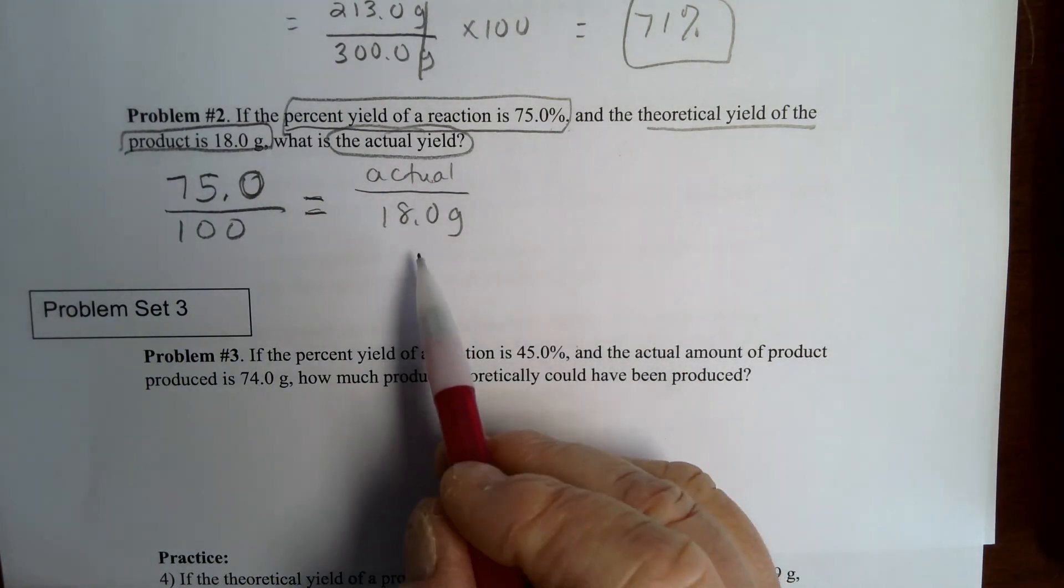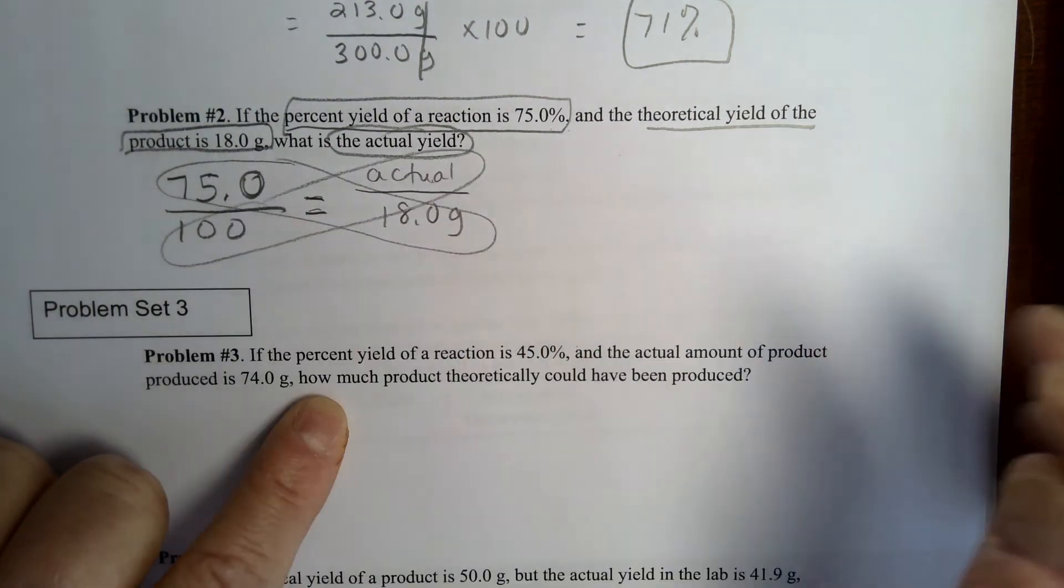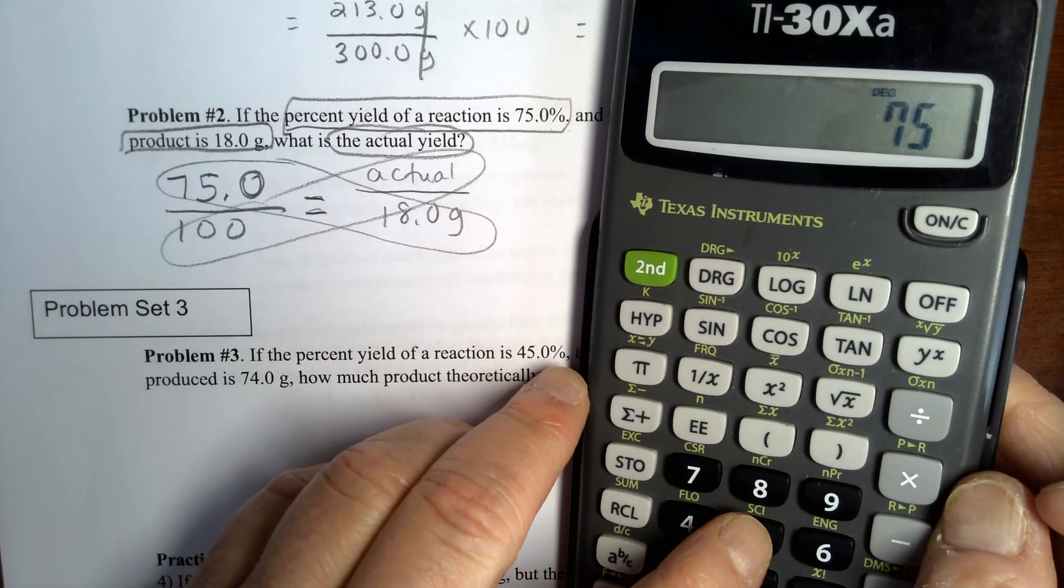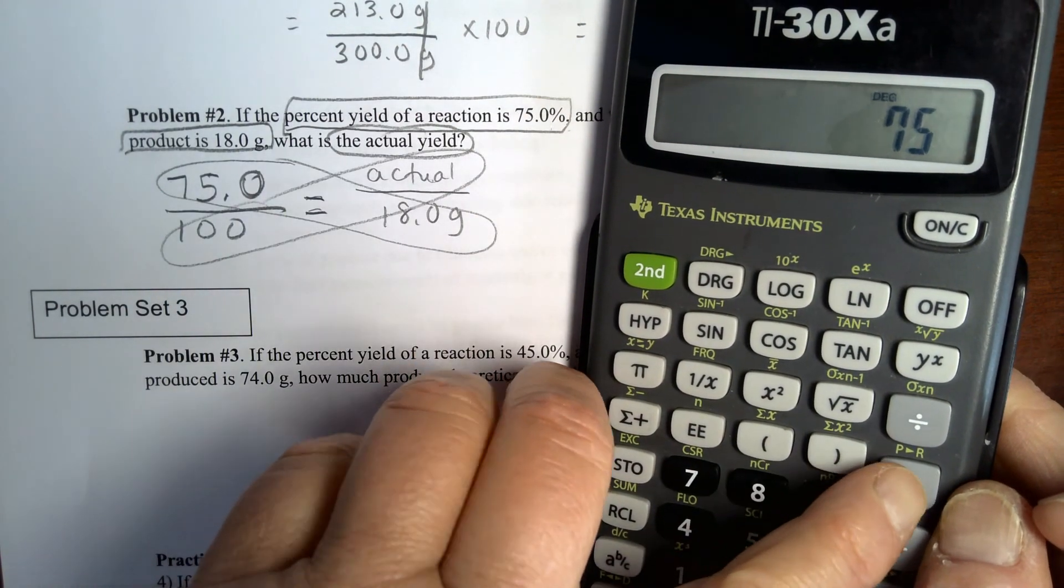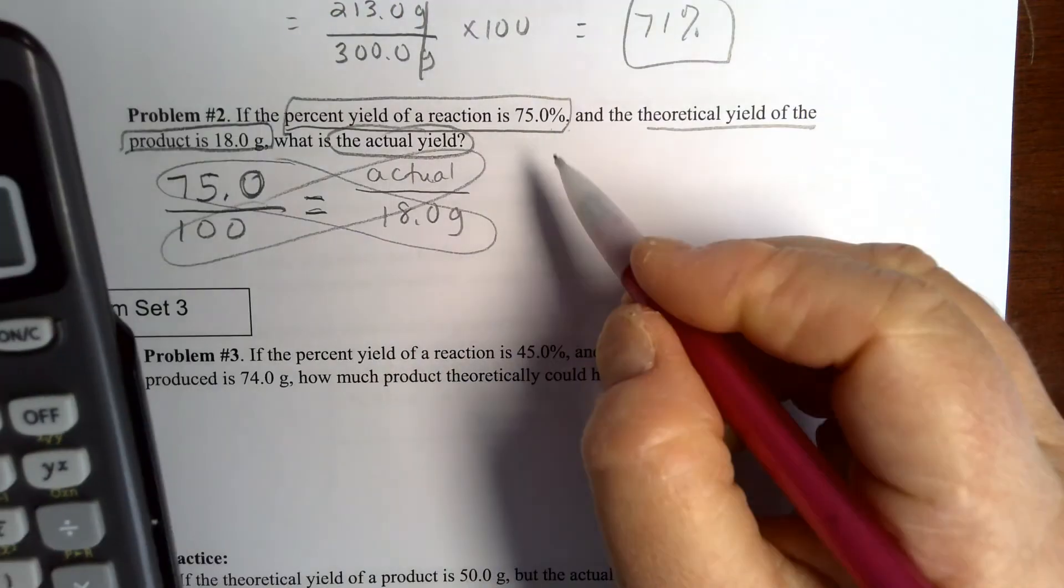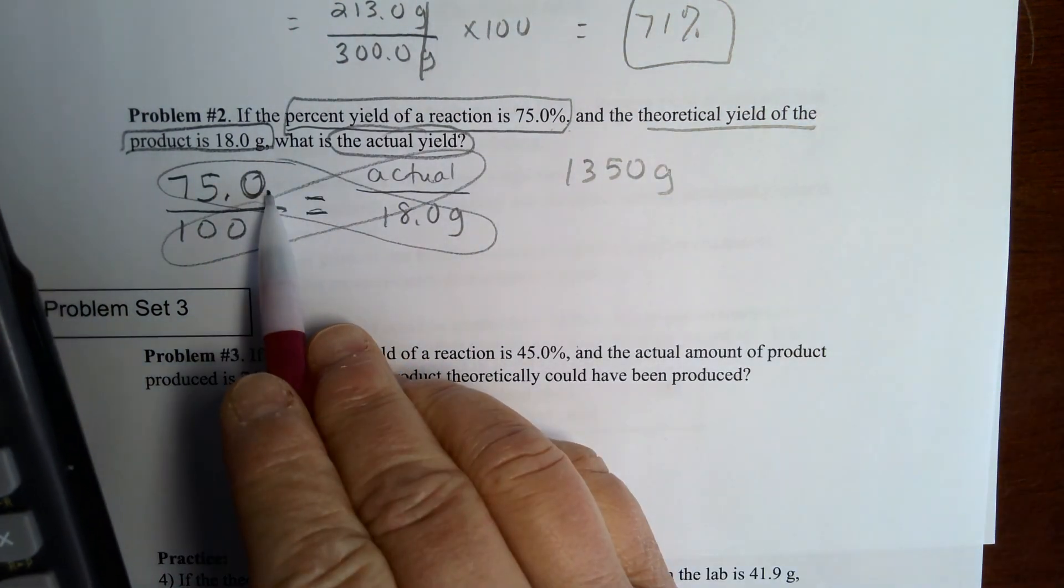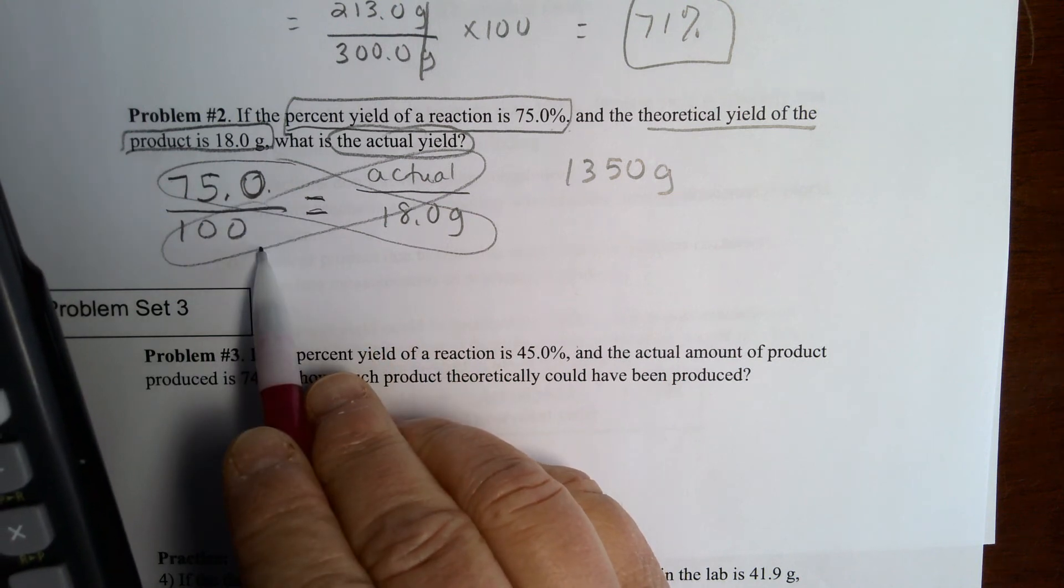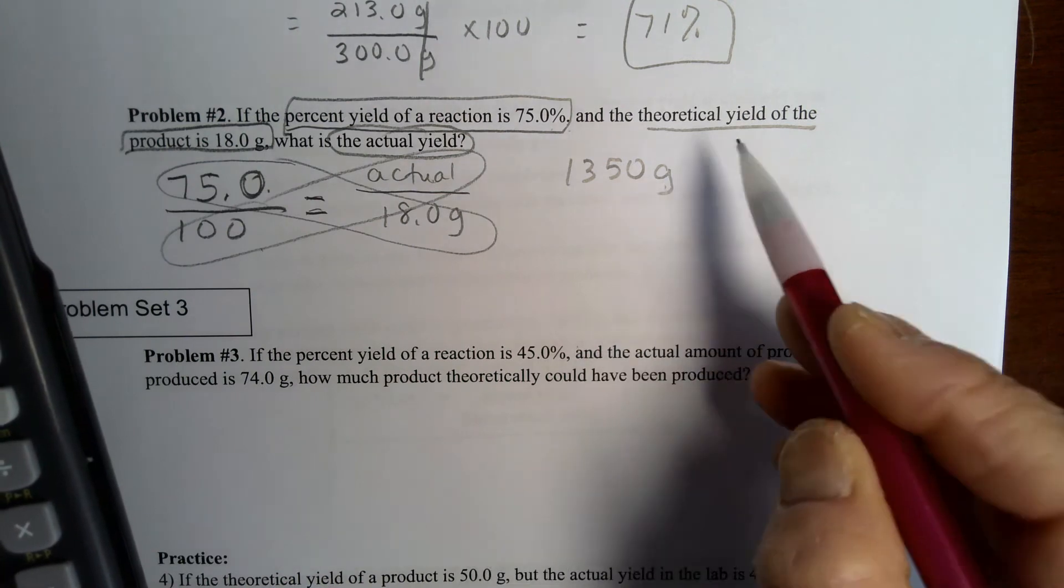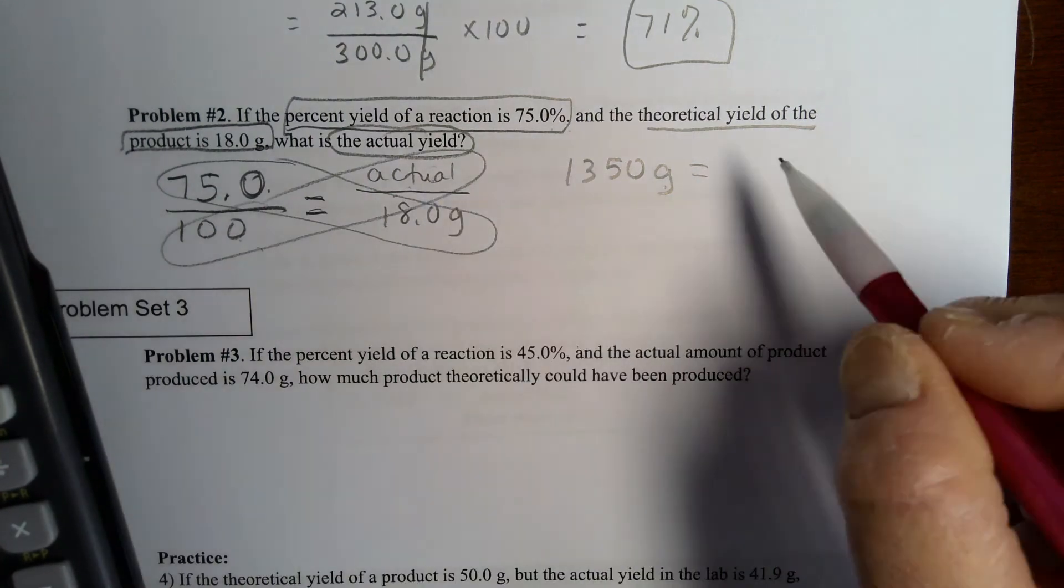And so if we do that, we are going to get 75 times 18, that's going to be equal to 1350 grams, because this 75% had no unit, neither does the 100. The only unit here in this problem is grams, so we should have that unit of grams there. And that's going to be equal to 100 times our actual yield, x.